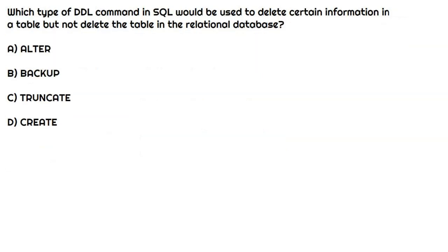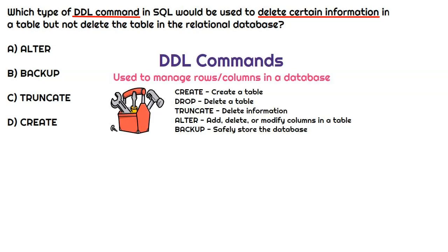This question asks which type of DDL command in SQL would be used to delete certain information in a table but not delete the table itself. DDL stands for data definition language, and DDL commands are used to manage rows and columns in a database. If we want to delete specific information like rows or columns in a table but not the table itself, we would use the truncate command — because if we wanted to delete the entire table, we would use the drop command. So truncate is the correct answer.